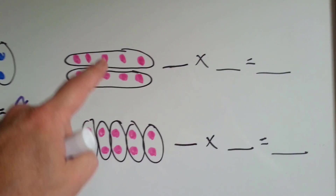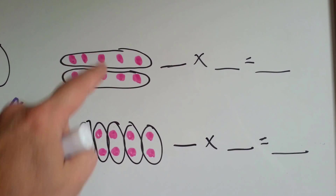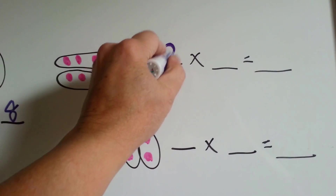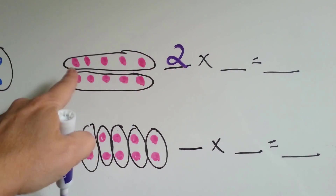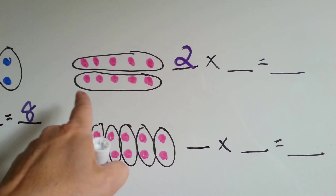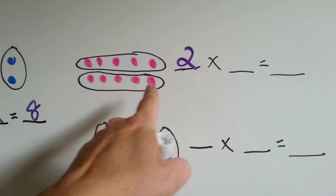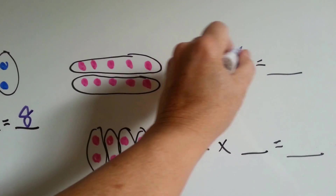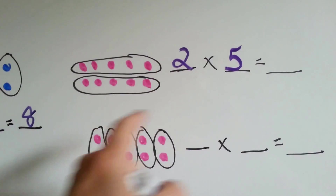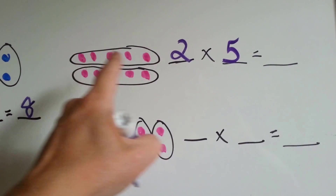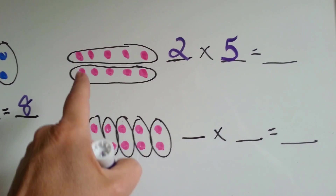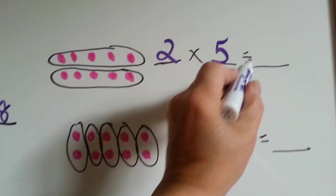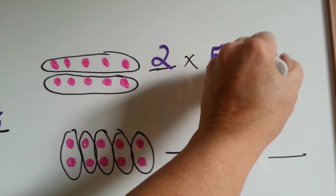Let's do this one. How many black circles are there? There's two. How many pink dots are in each of these circles? Five. How many are there total? Ten. Two times five equals ten.